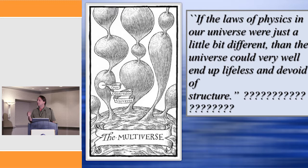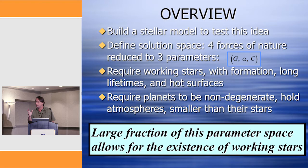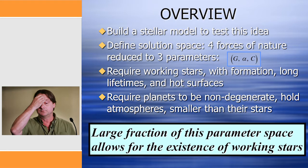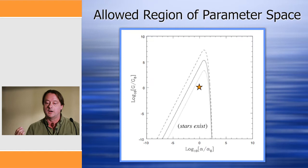That's just one aspect of what I think we need for habitability. To answer this question — to cut a long story short — I'm going to build stellar structure models, and I'm going to vary, to start with, only two things: the fine structure constant alpha and the gravitational constant G. And I'll ask: in that plane of parameters, alpha and G, what range of parameter space allows for working stars?